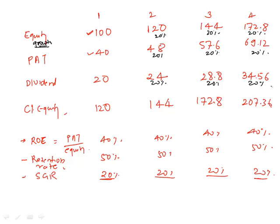In this example your equity will keep on growing at the same rate, the same rate for PAT and the same rate for dividends. Are we fine with this?